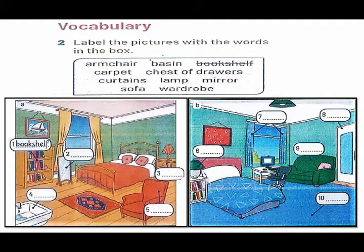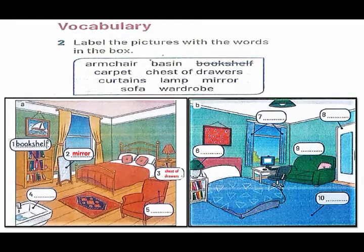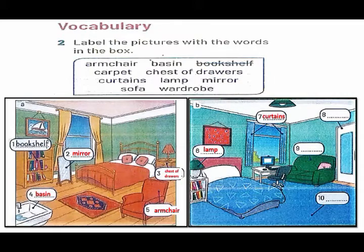There is some vocabulary about furniture within these two rooms. We have to label each piece of furniture with its name. The first piece of furniture is labeled for you: on the left, bookshelf. Number two: bed. Number three: chest of drawers. Number four: basin. Number five: armchair. Number six: lamp. Number seven: curtains. Number eight: wardrobe. Number nine: sofa. Number ten: carpet.